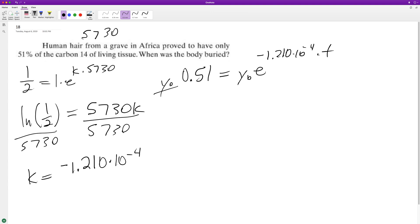We divide through by Y sub zero, they cancel out, and we're gonna take the natural log of both sides. Natural log of 0.51, natural log of E is just one, so we have negative 1.210 times 10 to the negative fourth times T.